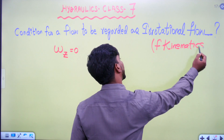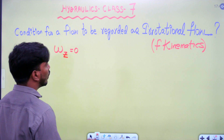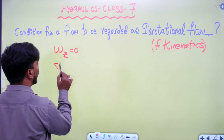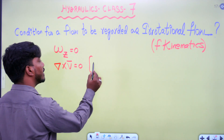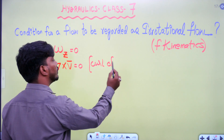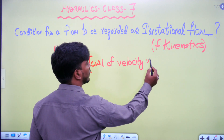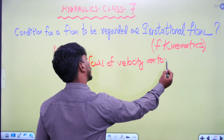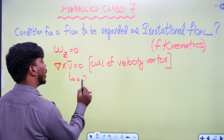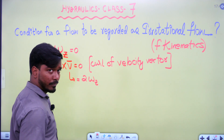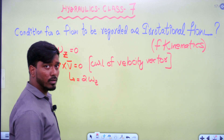This question is from fluid kinematics. For irrotational flow, angular velocity is zero. Angular velocity can also be regarded as curl of velocity vector, which is also equal to zero. The curl of velocity vector formula is 2 times omega-z, and since angular velocity is zero, the curl of velocity vector is also equal to zero.